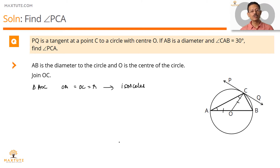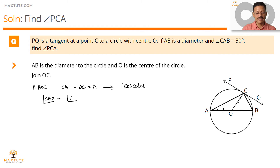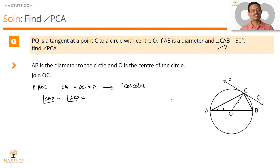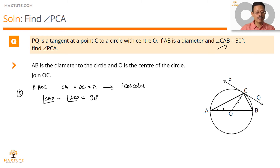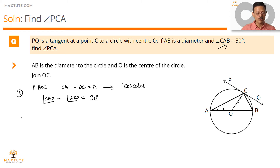Do we know the value of any one of these angles? Angle CAO equals angle ACO — both are equal. The question tells us angle CAB equals 30 degrees, and CAB is the same as CAO. So both these angles measure 30 degrees. Using the property of an isosceles triangle, we have found the measure of angle ACO.